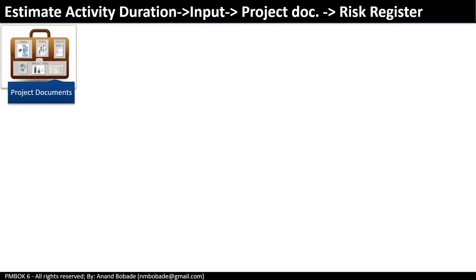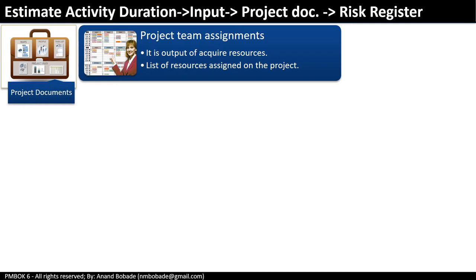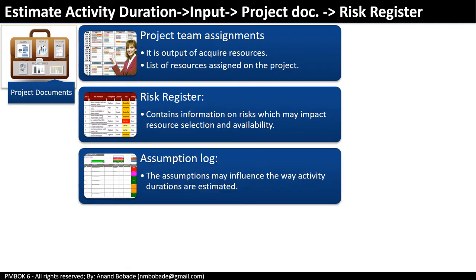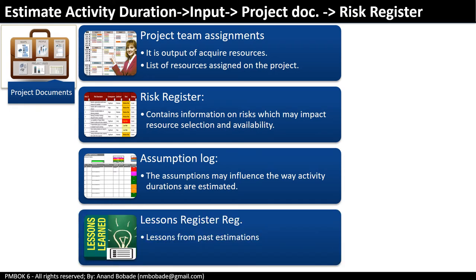Project team assignment is an output of the Acquire Resources process and provides a list of resources assigned to the project. The risk register contains information on risks that may impact resource selection and availability — for example, if a specific named resource is assigned due to expertise, the risk is there is no alternative if that resource takes emergency leave or leaves the company. The assumption log may influence how activity durations are estimated and may contain information on project risks. The lessons learned register captures lessons from past estimation activities on previous projects.